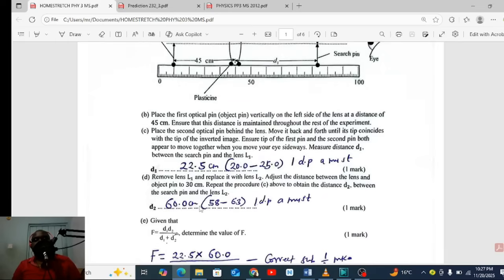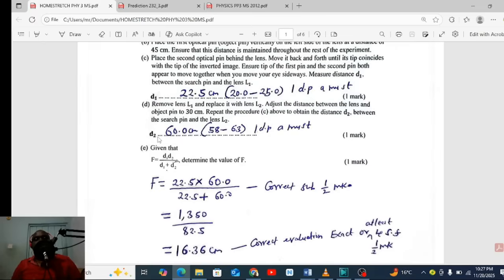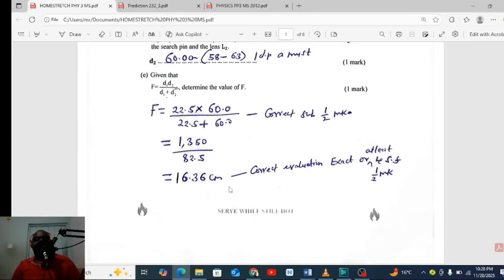Next, d2 is 60.0. Do not forget to put it to one decimal place so long as we're measuring in centimeters. Now you have d2, you have d1, you need to get f which is d1 times d2 divided by d1 plus d2. That is just a matter of using a calculator. Then if the answer is very long, always make sure you give it to four significant figures.